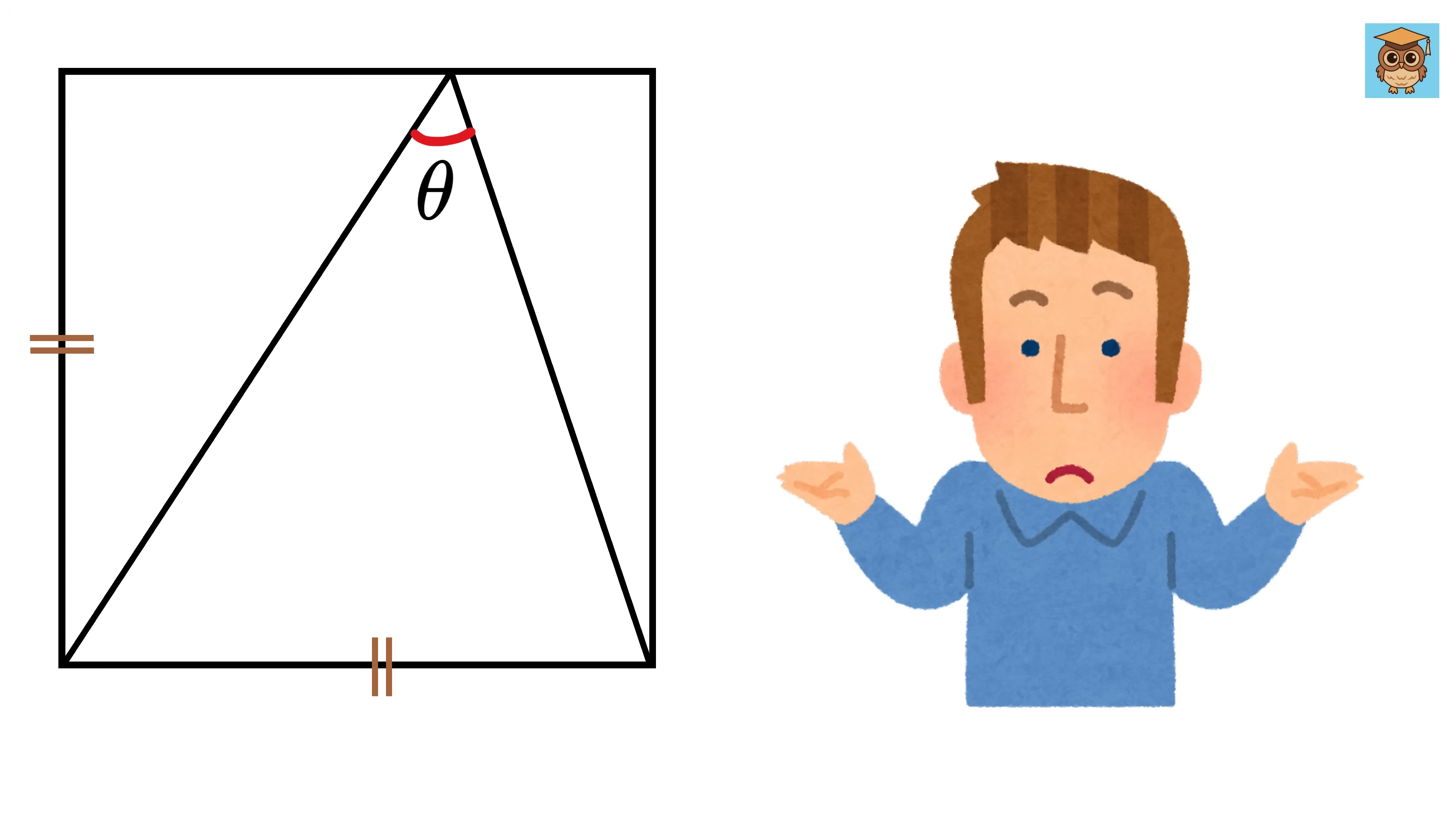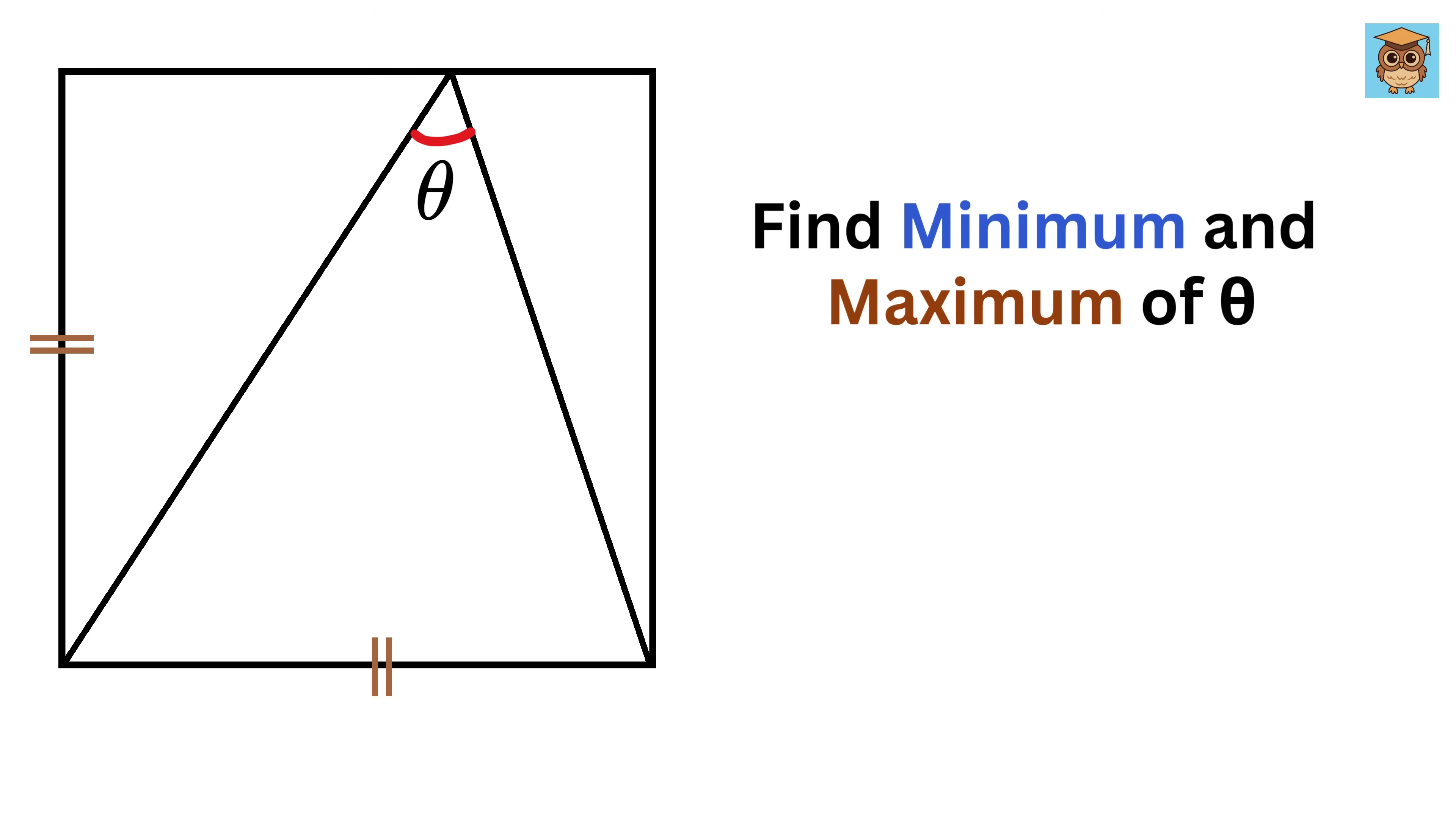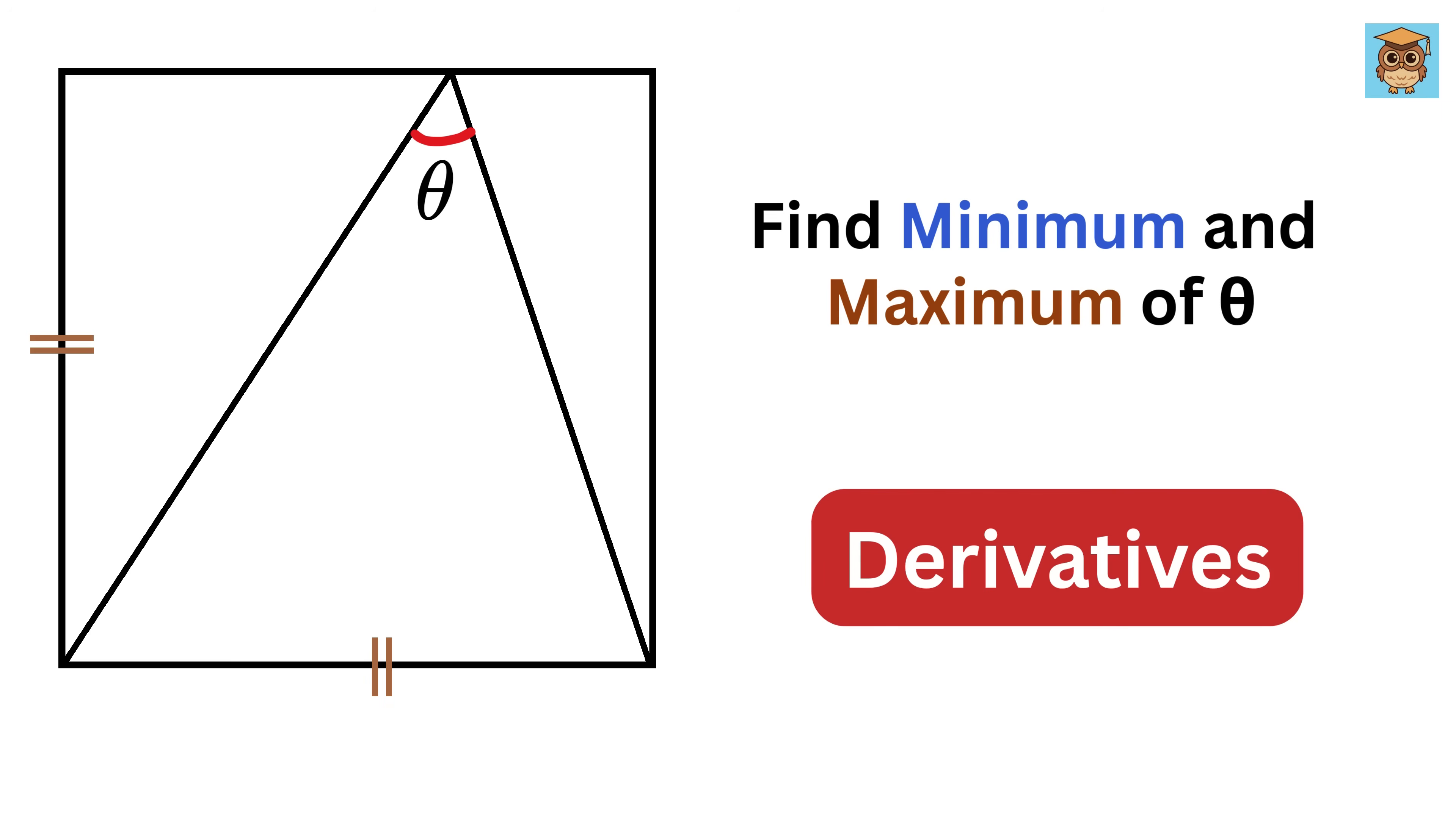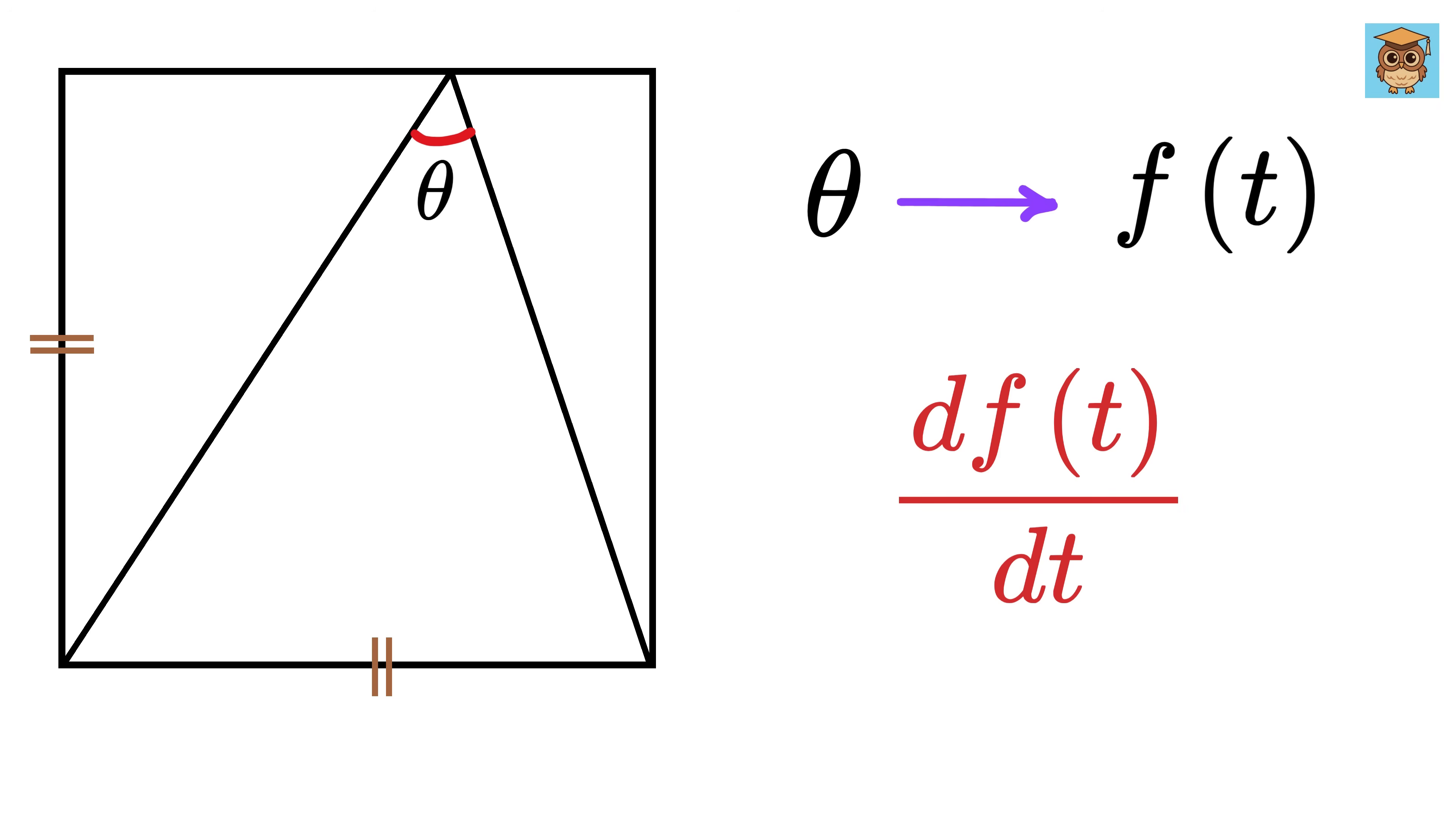Without giving any other information, we are asked to find the minimum and maximum values theta can take. So can you solve it? We know that whenever we see words like minimum and maximum, the first thing that comes to mind is using derivatives, but for that we need to have theta as a function in terms of some variable so that we can differentiate it and find where theta reaches its minimum or maximum value.